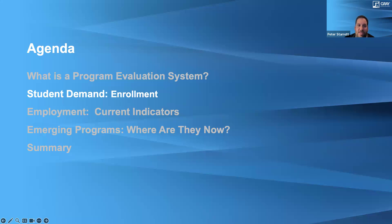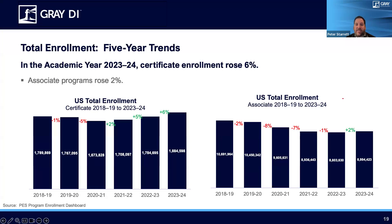Now we're going to look at enrollment volumes. Last month we covered new student enrollments; today we're looking at total enrollment. The biggest change is that associate degree growth is a year behind. We were down 1% versus new student enrollments being up slightly. Now we're seeing total student enrollments are up 2% for associate degrees in 2023–24 compared to the prior year. So finally, after several years of downward trend — 2%, then 8 and 7 down to 1 — we're seeing some growth in associate degrees.